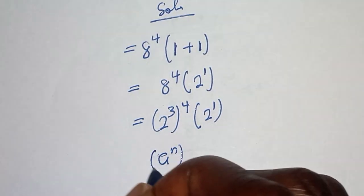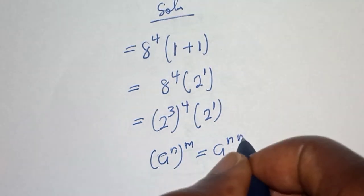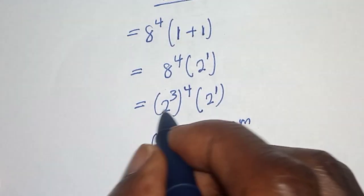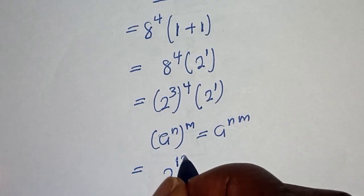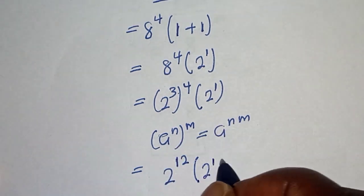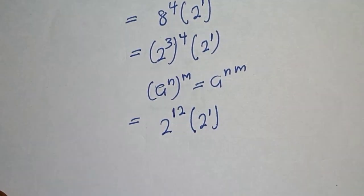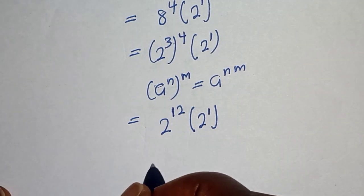Then this becomes 2 raised to power 3 times 4, which is 12, bracket, 2 raised to power 1. Also, if you have a raised to power n multiplied by a raised to power m, this is equal to a raised to power n plus m.